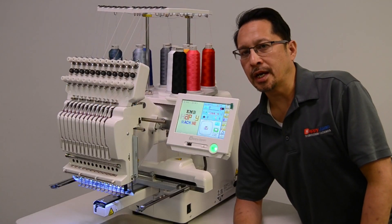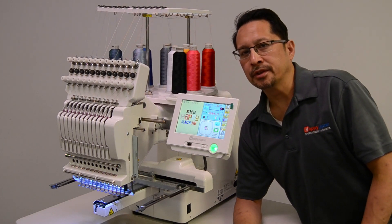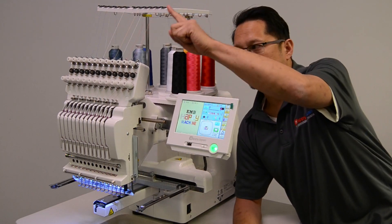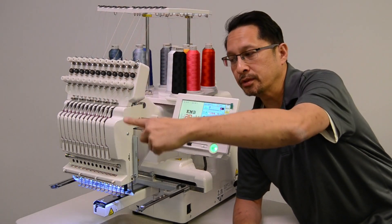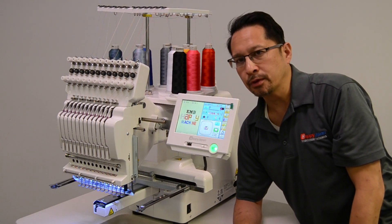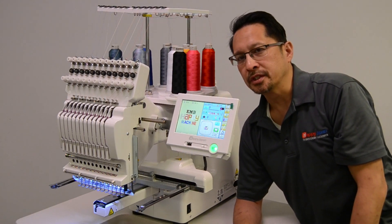In this video we'll show you how to run the thread through the complete thread path from the cone all the way up to the thread tree and down through the sewing head and down to the needle on your HCS3 Voyager 12 needle single end embroidery machine.